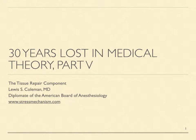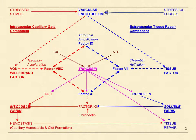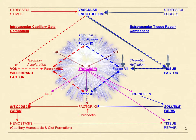Welcome to Part 5 of this series of presentations that describe the mammalian stress mechanism postulated by Hans Selye. This slideshow will discuss the tissue repair component of Selye's mechanism. Selye's stress mechanism is a single cohesive mechanism, but it is easier to comprehend in terms of two semi-independent subcomponents called the capillary gait component and the tissue repair component.